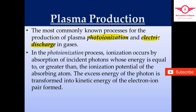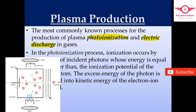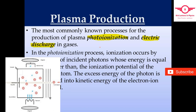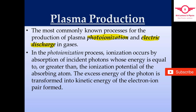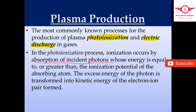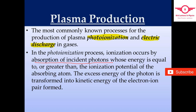Photo ionization and electric discharge are the two most common ways to produce plasma in the laboratory. In the photo ionization process, ionization occurs by absorption of incident photons. We have an atom and an electron which receives extra energy provided in the form of an incident photon — the atom absorbs that photon.